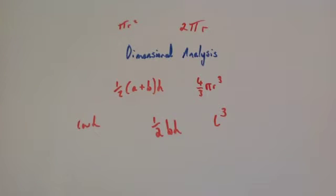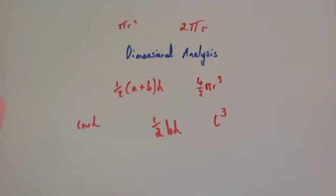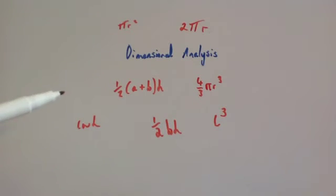But what happens if we encounter a formula for the first time? We may need to discover whether it's going to be an area, a volume, or just a length. So it's very useful to be able to look at a formula and work out whether it's going to be a length, an area, or a volume, or in fact maybe neither. In the exam they may give you a formula and ask you to say whether it's a length, an area, volume, or neither.